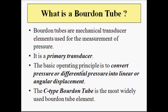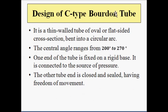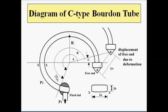The basic operating principle is to convert pressure or differential pressure into linear or angular displacement. Normally the C-type Bourdon tube element is used commonly, which we are going to discuss today. The C-type Bourdon tube is a thin-wall tube of oval or flat-sided cross section which is bent into a circular arc. The central angle ranges from 200 degrees to 270 degrees, forming a C-shaped structure.